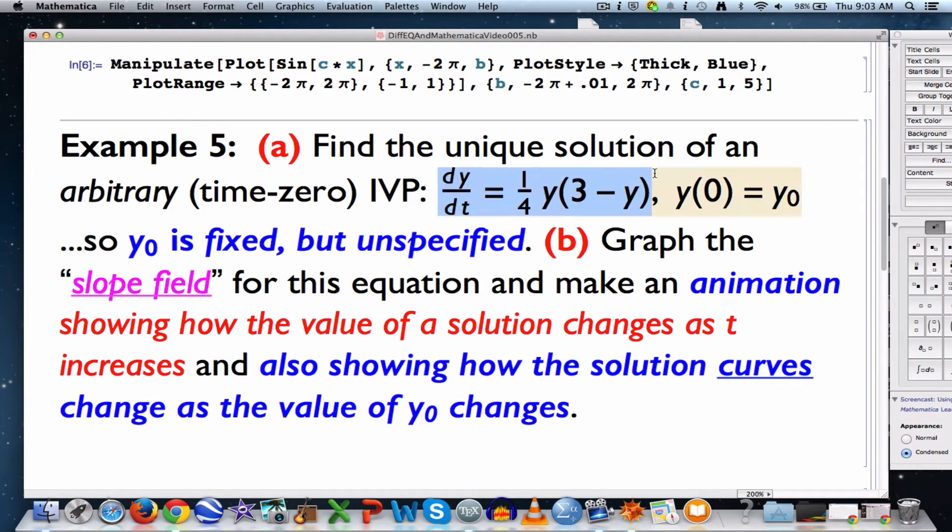Here's our differential equation from the last video that we solved. We found the general solution and solved an initial value problem where y(0) was equal to 2. Now I'm making the initial value of y fixed but unspecified, so I'm imagining y sub 0 as being some fixed number like 2 or 3 or 4, but not saying what it is. Because it is something specific, it's fixed even though it's unspecified.